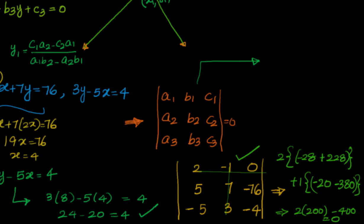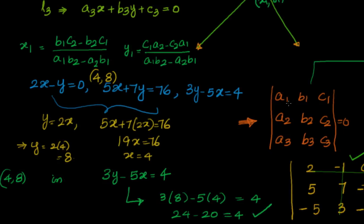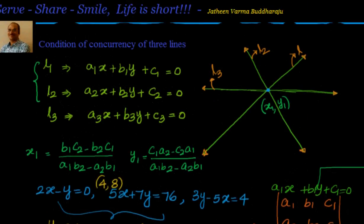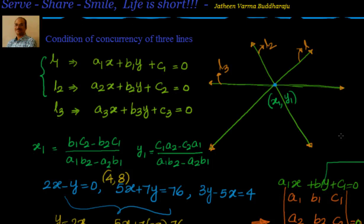So we can see that the condition of concurrency can be represented in determinant form: the determinant of the matrix formed by the coefficients of x, the coefficients of y, and the constant terms in the general form a1x + b1y + c1 = 0 should equal zero. Alternatively, solve for two lines, find their point of intersection, and substitute it into the third line — the third line will satisfy that point if all three lines are concurrent.